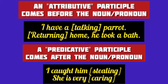Returning home — here returning is the present participle coming before the subject pronoun he to modify it. But I caught him stealing — here stealing is the present participle coming after the pronoun him to modify it. She is very caring — here caring is modifying the subject pronoun she. So, the participle may come attributively, before the noun or pronoun, or predicatively, after the noun or pronoun it describes.